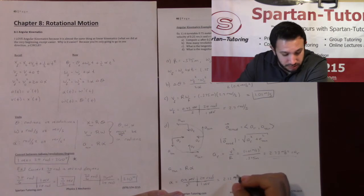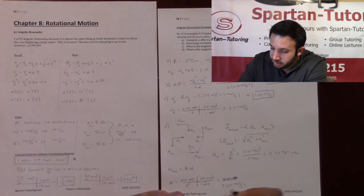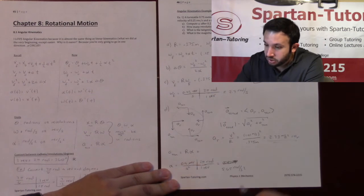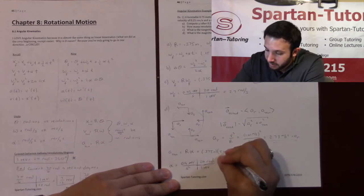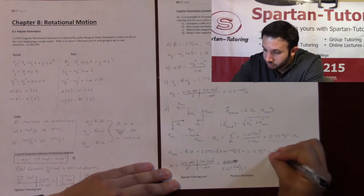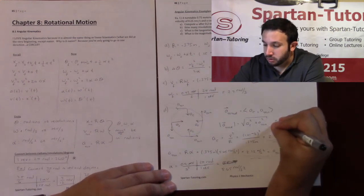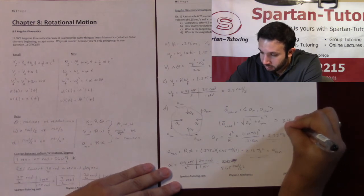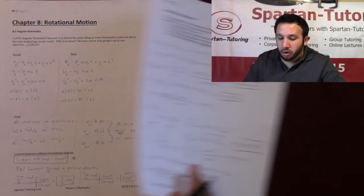Alpha = 5.65 rad/s², so tangential acceleration = 0.375 m × 5.65 rad/s² = 2.12 m/s². Now plugging into the total: a_total = √(2.73² + 2.12²) = 3.46 meters per second squared. This problem encompassed all of angular kinematics when dealing with it algebraically.